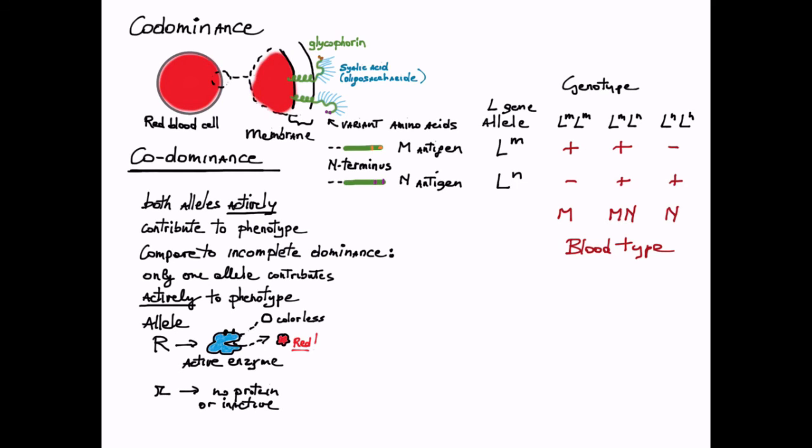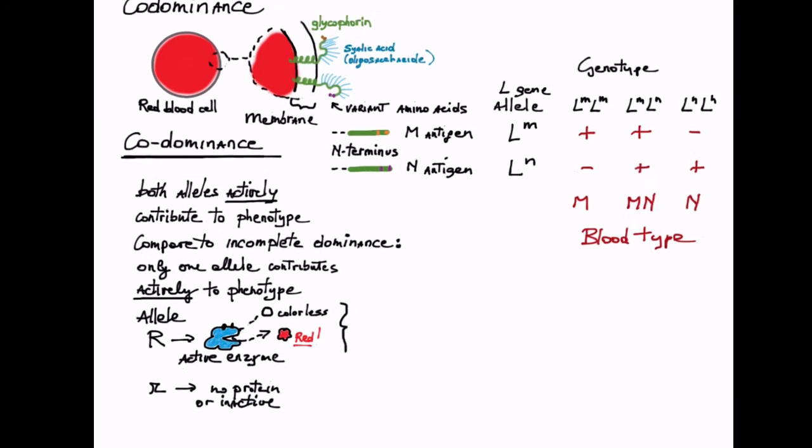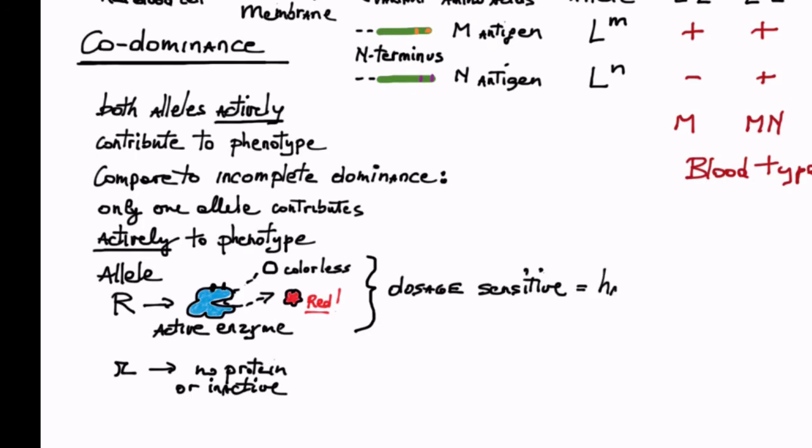While in many cases, such as Mendel's seven characters, a single dominant allele is sufficient, alleles that display incomplete dominance are dosage sensitive or haploinsufficient. In their case, one dose of gene product is not as good as two.